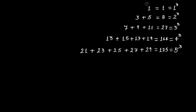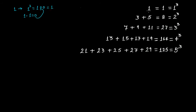Let's start from one. What is one squared? One squared equals one. Now, one minus one equals zero. Add this zero to one, and you get one. So your starting odd number for one cubed is one.